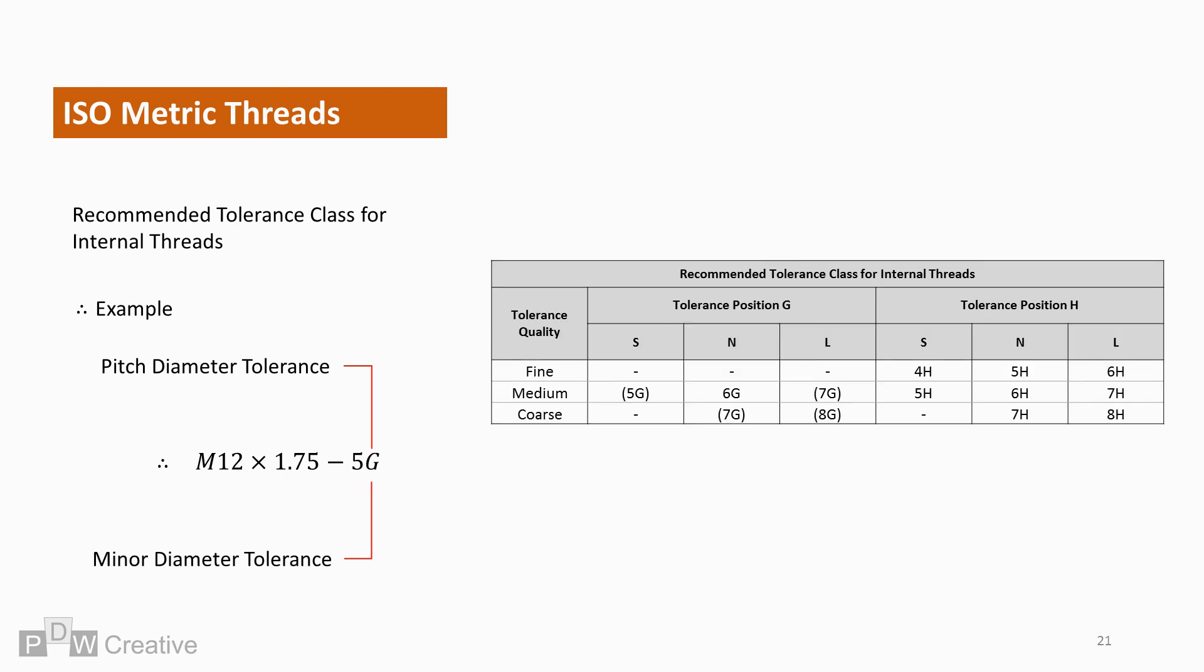Recommendations are a little more limited for internal threads. But this is because only G and H deviation positions are specified for this type of thread. Pitch and minor diameter tolerance recommendations are identical for both diameters.